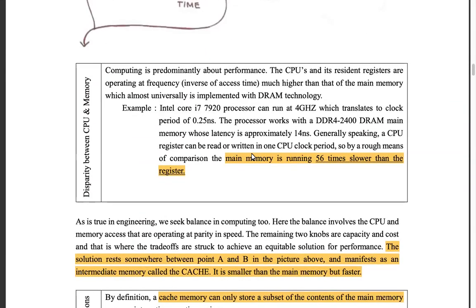In terms of numbers, if you see this page for Intel i7 based on their spec sheet, their main memory is running 56 times slower than registers. So you can see the gap in terms of access speeds — 56 times slower — that means if you're not storing something closer to your CPU or registers, you're going to suffer that much delay in terms of processing.